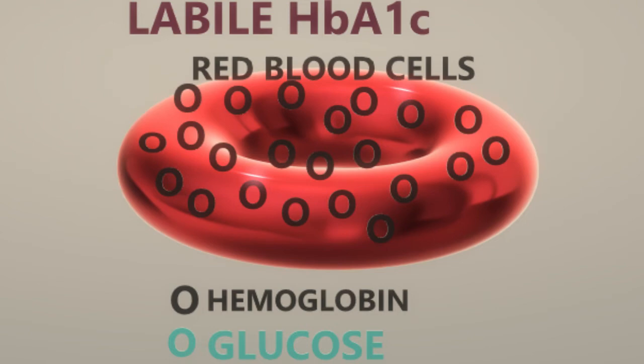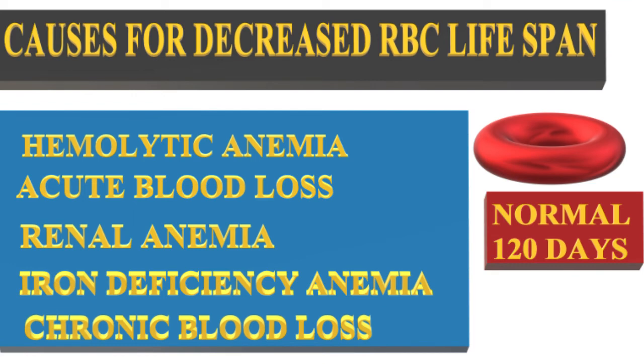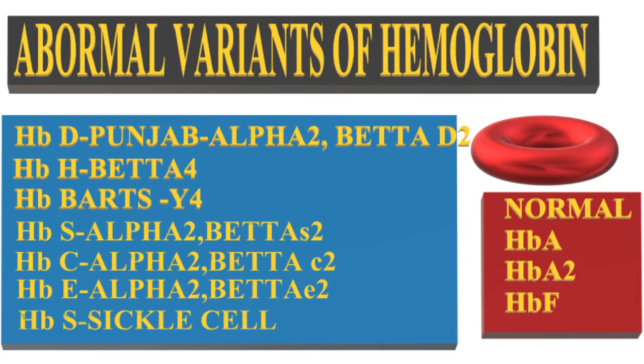The lifespan of red blood cells is a key determinant of hemoglobin concentration. Hemolytic anemia, acute or chronic blood loss can cause inaccurate results. Hemolytic anemia and renal anemias can lower the results, while iron deficiency anemia raises the value and it falls after replacement therapy. Icteric and lipemic samples may falsely elevate results in charge separation methods.